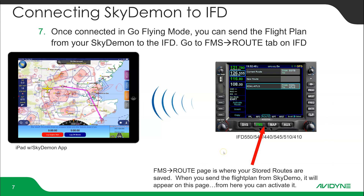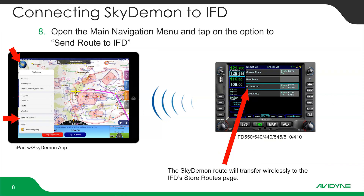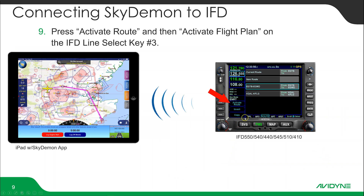Once you're on the FMS Route page, open the navigation menu and tap the option to send the route to the IFD. The navigation menu is the SkyDemon icon in the upper left, and you'll see 'Send Route to IFD' right there. When you select that, the SkyDemon route will transfer wirelessly to the IFD stored routes page — you'll see it pop right in.